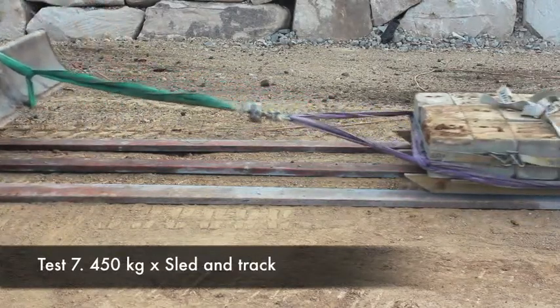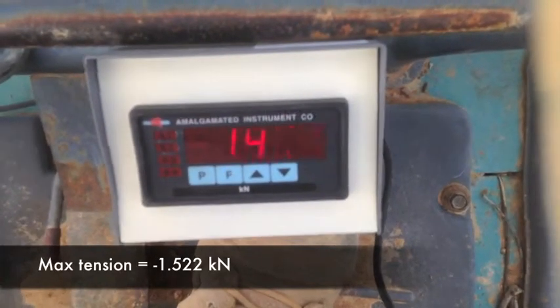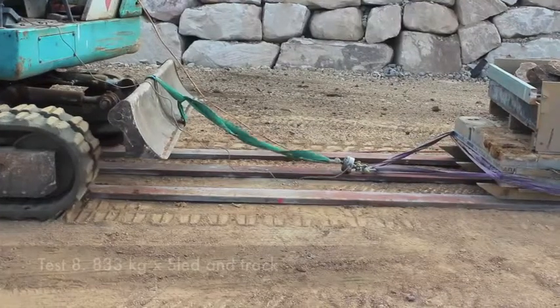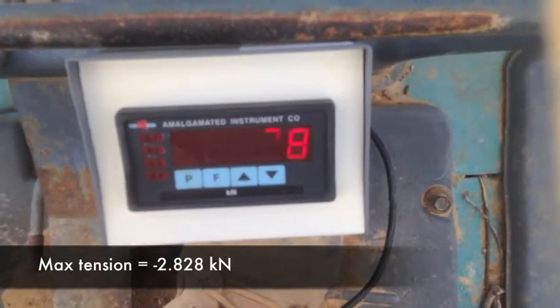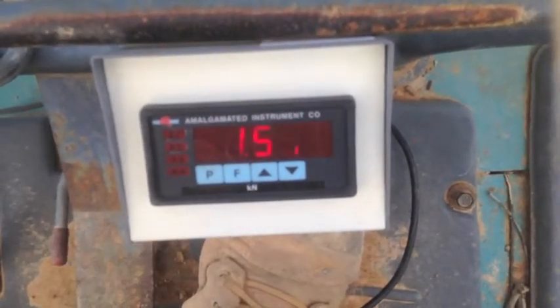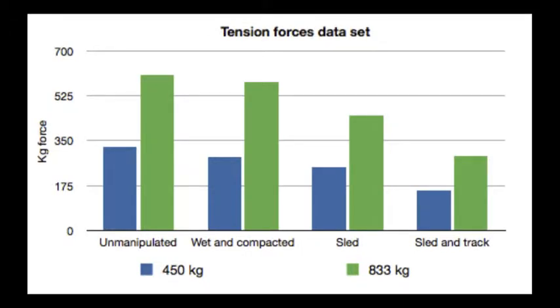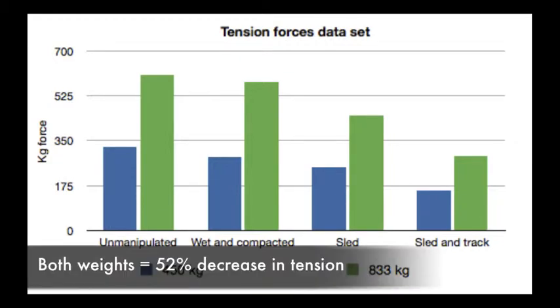Let's see what happens to the forces when we add a simple track underneath the sled. When the sled and track tension results are plotted against the control, compaction and simple sled tests, another decrease in force is seen. This time both the 450kg and the 833kg weights experienced a tension that was 52% less than the tensions experienced in the control test. Due to the fact that no real evidence has ever been found showing how sleds and tracks may have been utilised in the transportation of megaliths, these results can only be used as data showing that as the technology may have increased, the less force would have been needed to pull the stones.